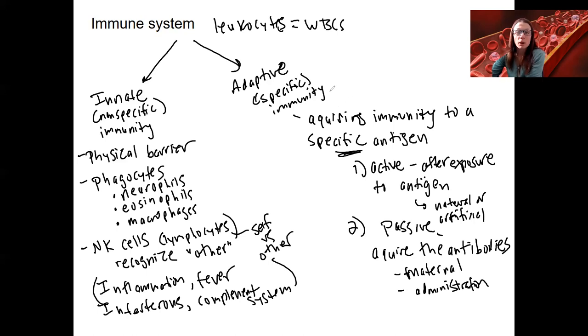Last thing to do is tell you about the cells of the adaptive response. Not going to do them justice. They are all lymphocytes, which, again, are types of, that trigger, that learn this adaptive part. Types of leukocytes. Three types of lymphocytes.